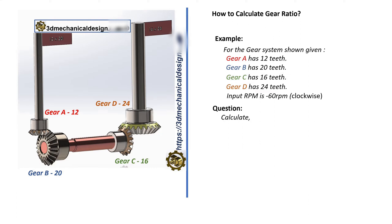Question: Calculate A, output speed and direction, and B, gear ratio.